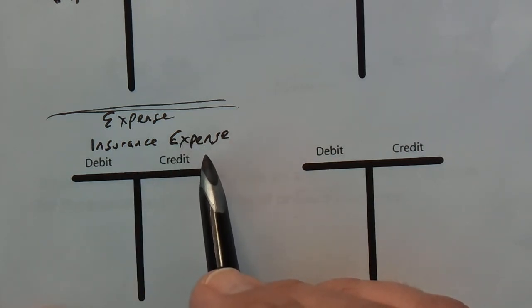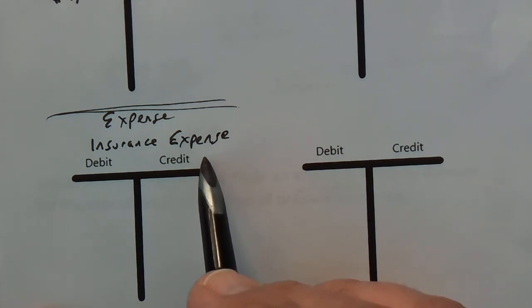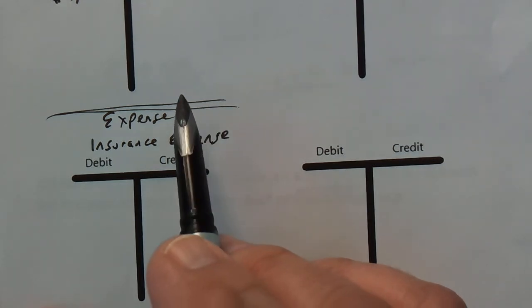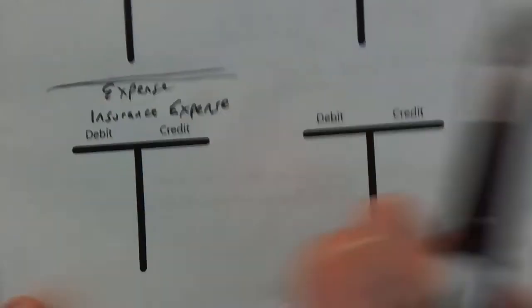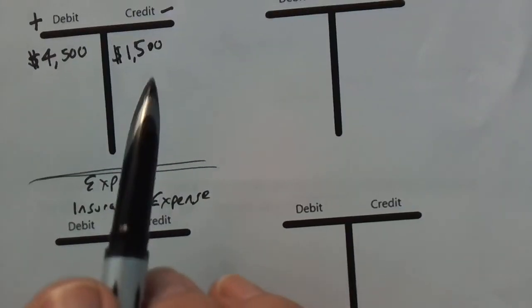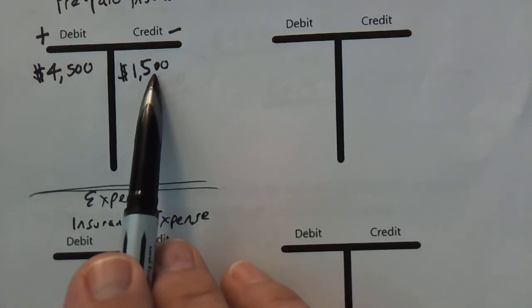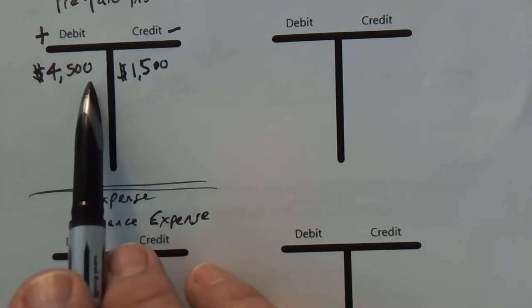Be aware that you might get more granular and might have to go into more detail. But in this case, we have now credited our prepaid insurance for $1,500.